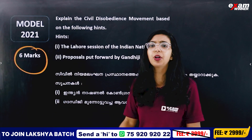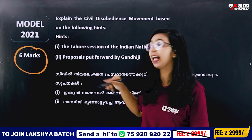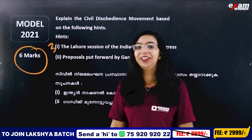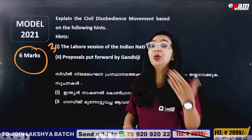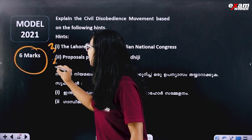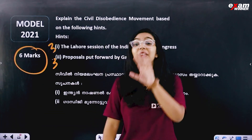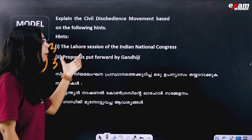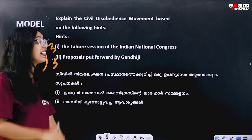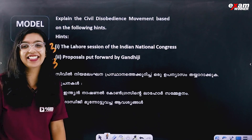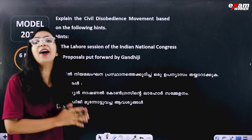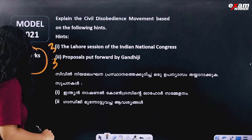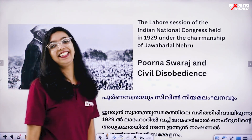If you want to ask questions about 6 marks, you will answer 3 marks per hint. If you have 2 hints, each hint carries 3 marks. The next one is 6 marks total. Then we will ask questions about the Lahore session of Indian National Congress.